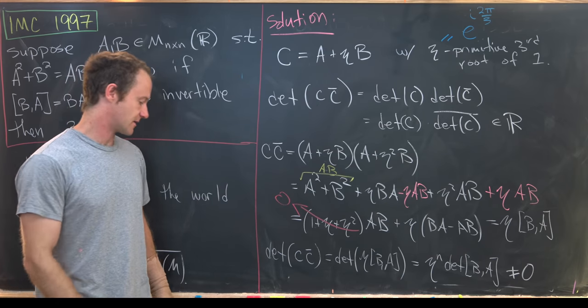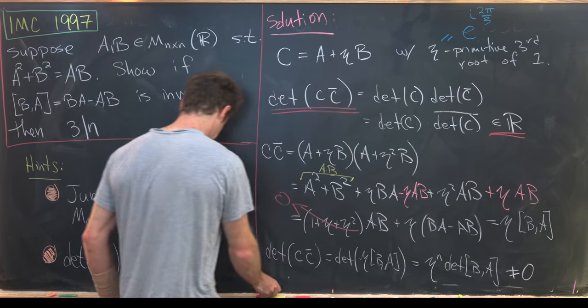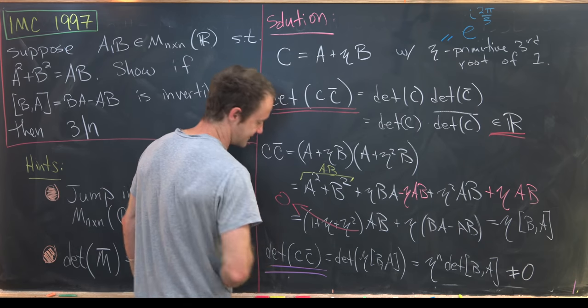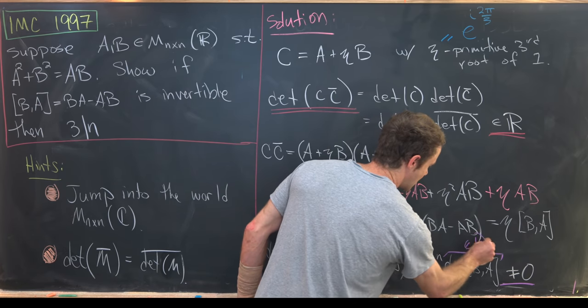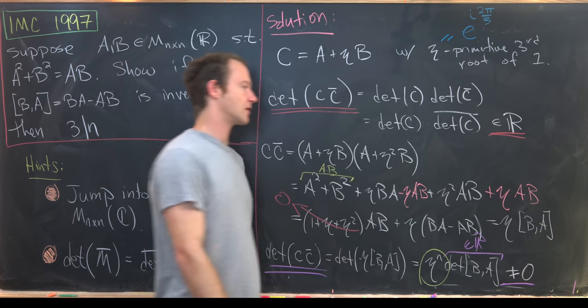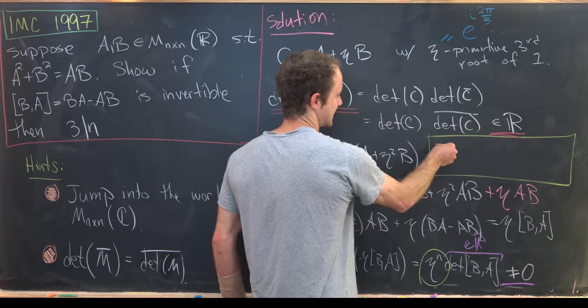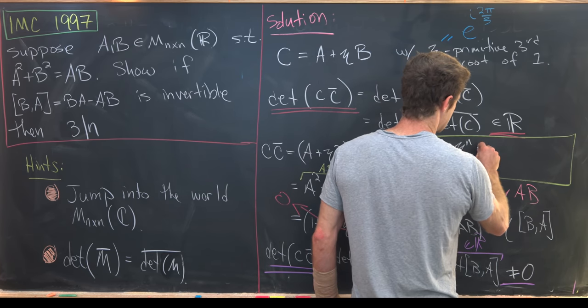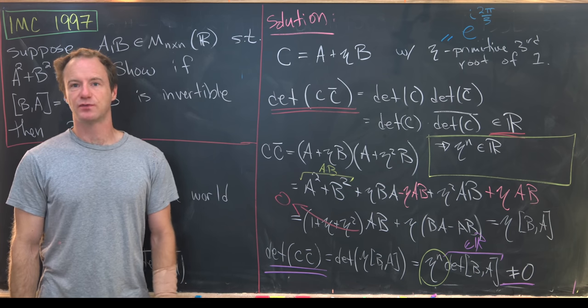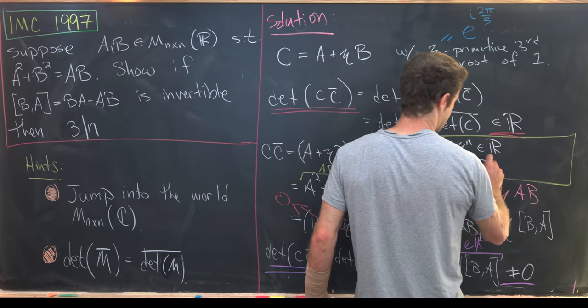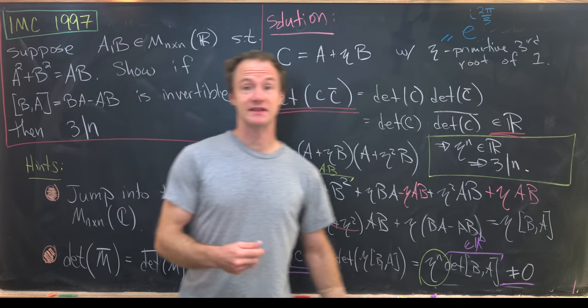So now let's put these two things together. On the one hand, we see that the determinant of C C bar is a real number. But on the other hand, we see that the determinant of C C bar is non-zero. Keeping in mind that this determinant is a non-zero real number, that means that this bit that's left over must be a real number. So that means we can finish our entire argument in this little box. So putting those two things together, we have eta to the n is a real number. But that only occurs when n is a multiple of three. And that's because eta is a primitive third root of unity. So that's just a standard rule about primitive roots of unity. And so that's exactly where we wanted to end. And that's a good place to stop.